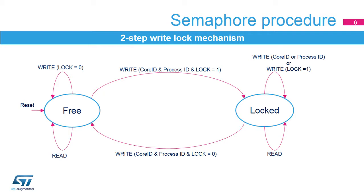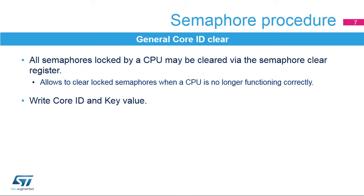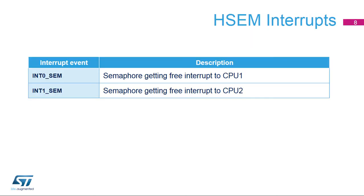Writing the core ID or the process ID, or writing the lock bit with 1, will keep the semaphore locked. In the case where locked semaphores from a malfunctioning CPU are to be cleared, this can be done by writing a key value in the HSEM key R register and writing the key value and the core ID in the HSEM CR register. It will clear all semaphores locked by the corresponding core ID. A semaphore get-free interrupt will be generated when enabled. When a semaphore is freed, an interrupt can be generated to a CPU. Each CPU has its own set of semaphore enable or IER, status or ISR, states before the masking or MISR, and clear or ICR registers.